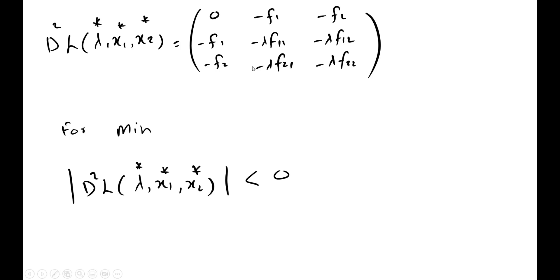This entire matrix is known as the bordered Hessian matrix, and if we find its determinant we get the bordered Hessian determinant. For minimization of the function it should be negative. It contains only one principal minor, bordered by the first order derivatives of the constraint. If we have more than two factor inputs, we will have more leading minors in addition to the first principal minor.